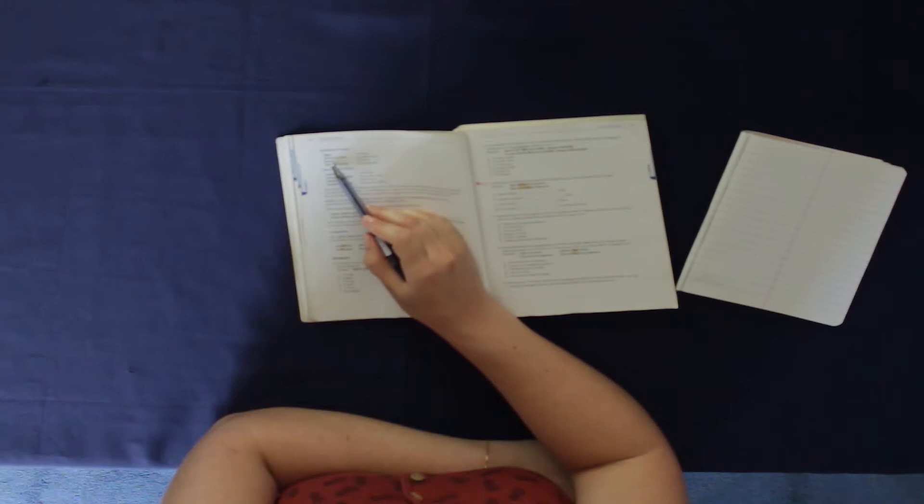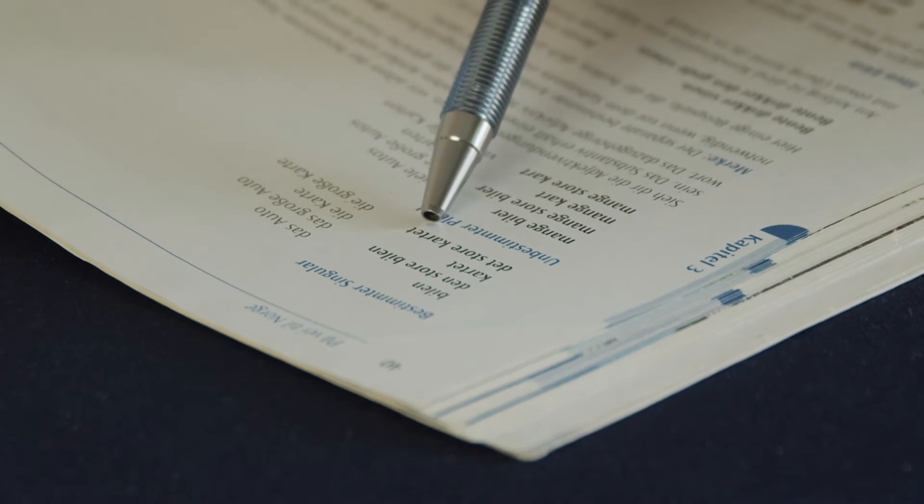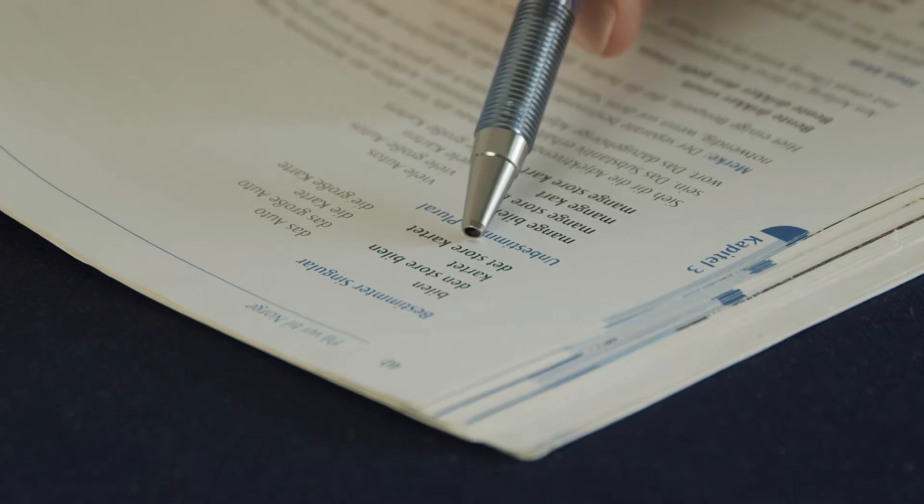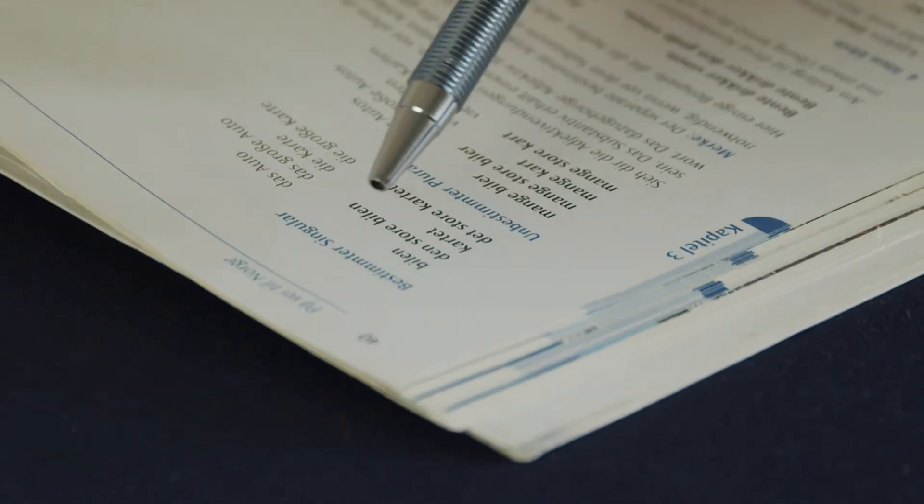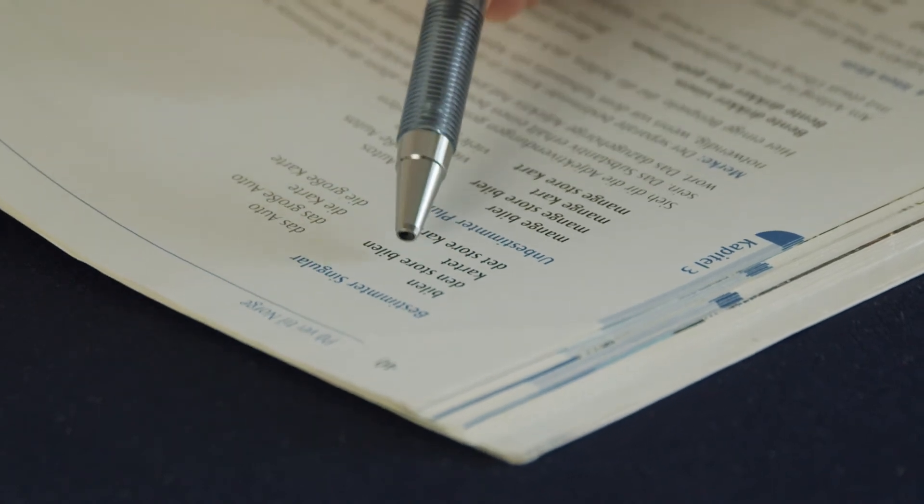Kartet, the map. Det store kartet. So here we also add an e. Easy to remember, if it's definite singular we always add an e to the adjective.